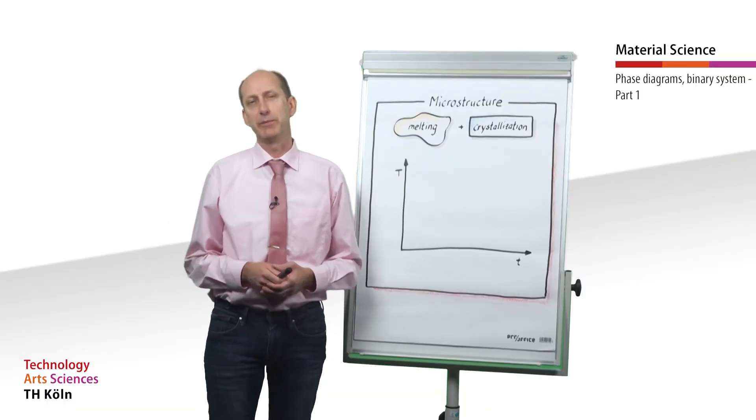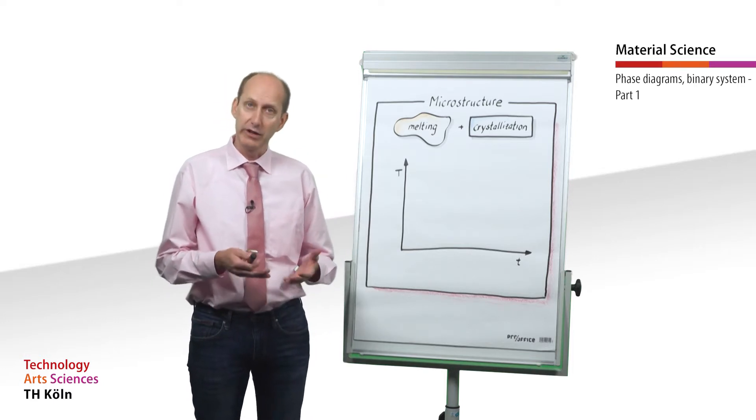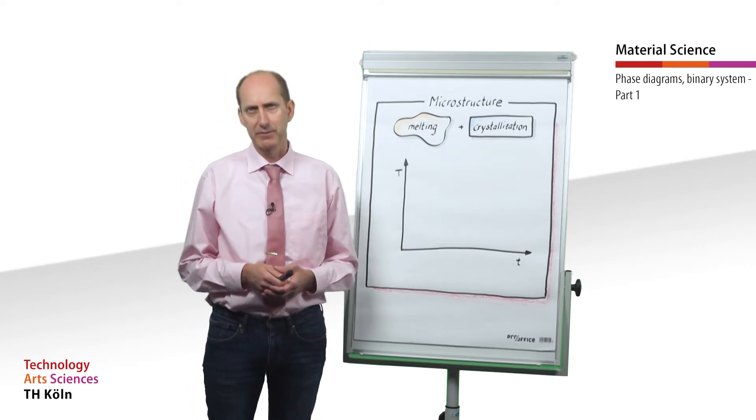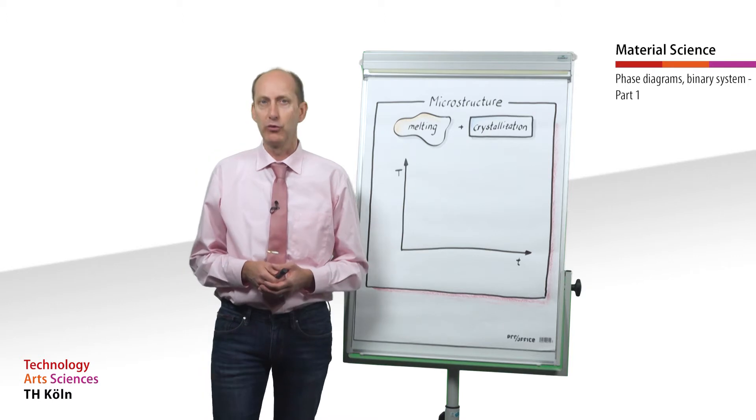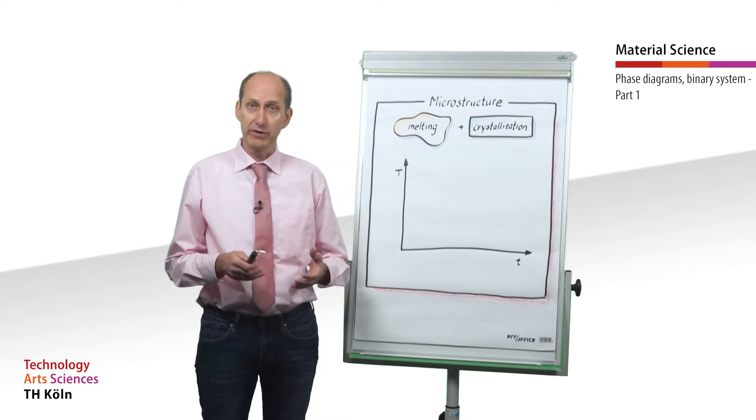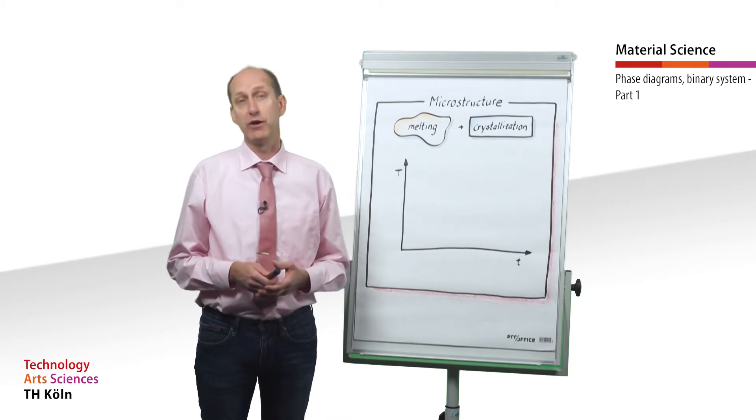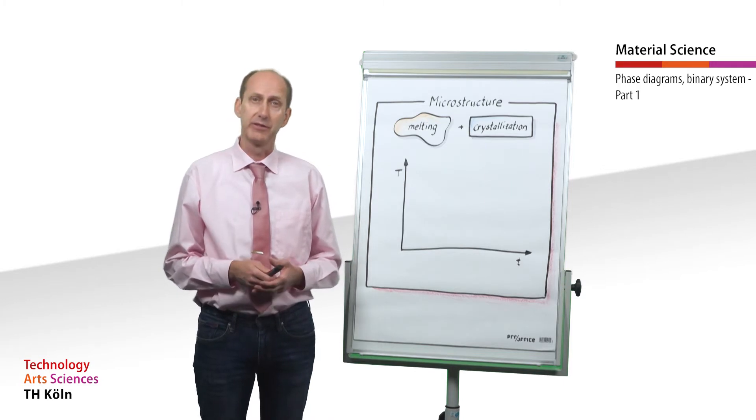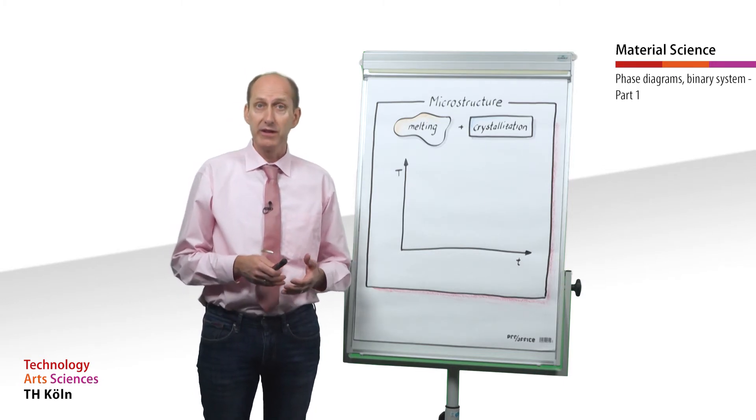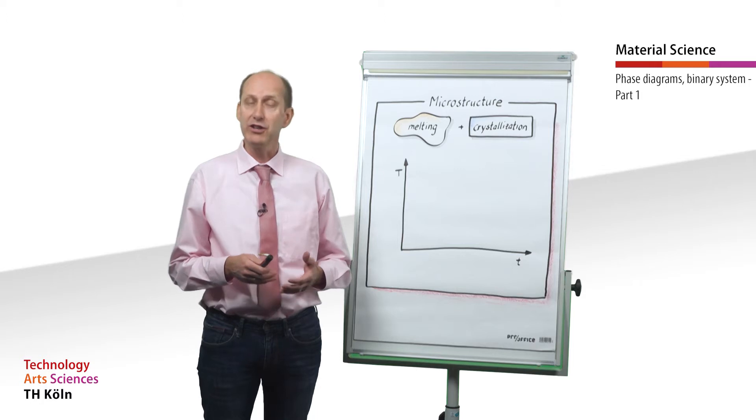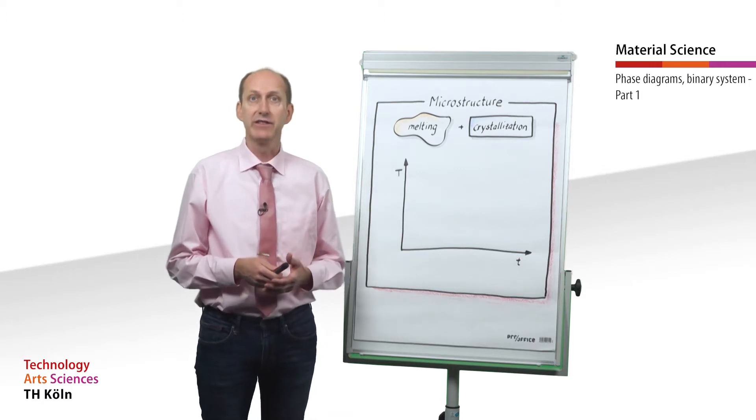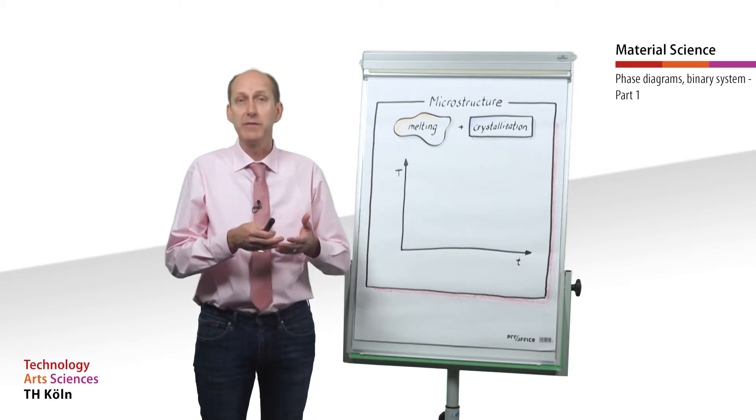The direct transition of a substance from a solid state to a liquid state is called melting. But what actually happens during this process? At room temperature there is no movement of the atoms in the microstructure's lattice. Energy added is transformed into oscillation energy, resulting in an increase of temperature and volume.